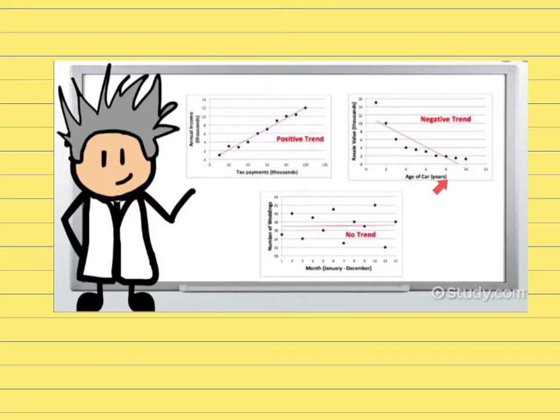A negative trend is perfect for real life - the age of your car and the value of your car. The longer you have your car, it's worth less and less money. Then this bottom graph has no trend at all. We can't see an upward or downward trend in the pattern of the dots, so you could draw a straight line across it and just say there's no trend at all, there's no correlation between x and y.